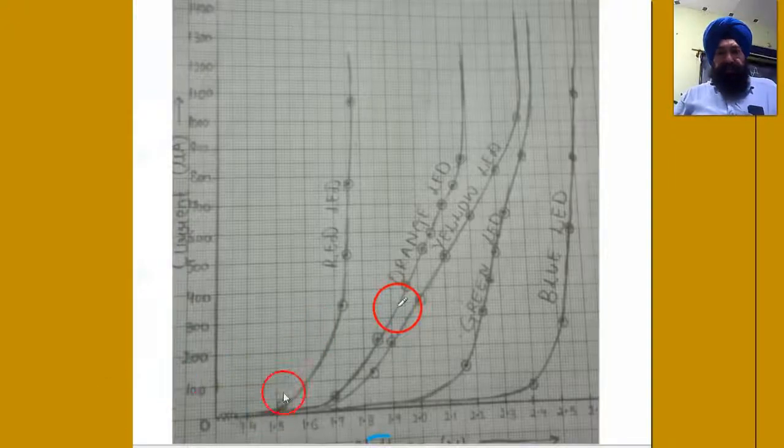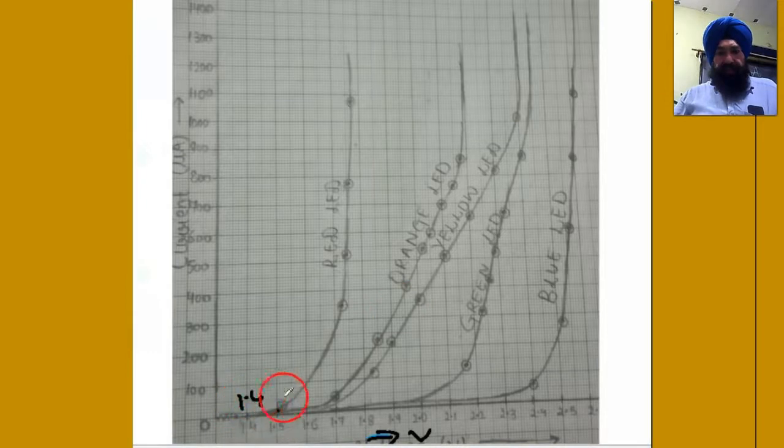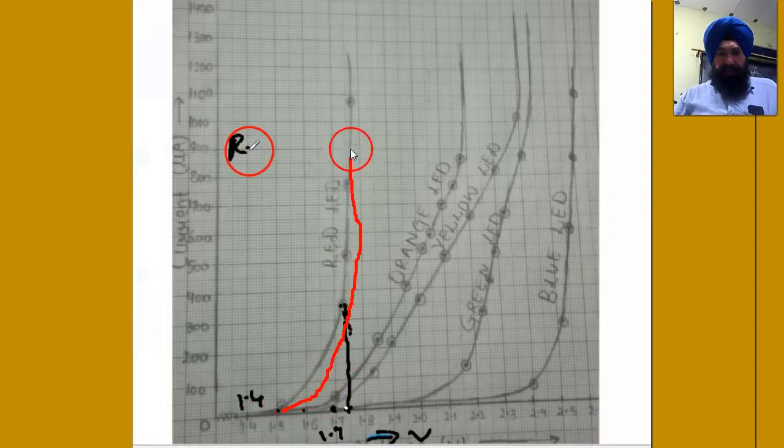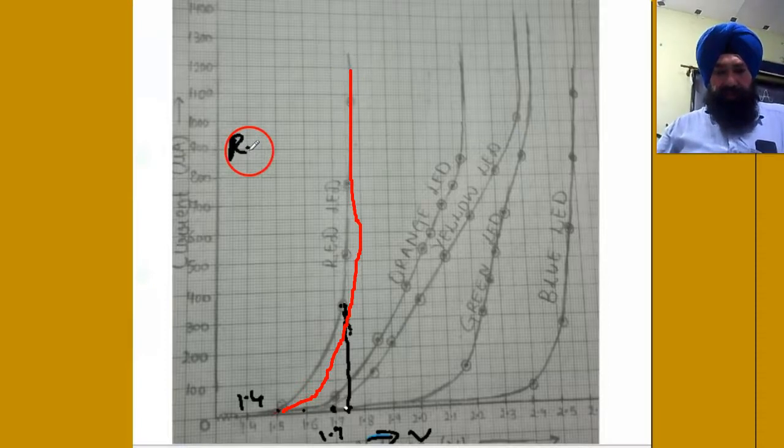Now we draw a graph for voltage along this side, 1.4, 1.7. This is the graph for the red LED.